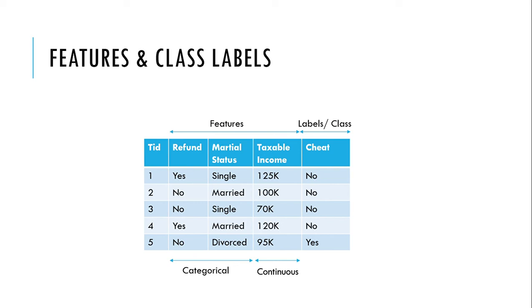The last column is the output column — whenever the machine learning model produces output, it will output the label column only, which is called the label. In this example, the label is 'cheat' — whether the person cheated or not while filing their taxes. Based on certain features, we predict whether the person cheats or not. There are two labels here, so this is also called binary classification.